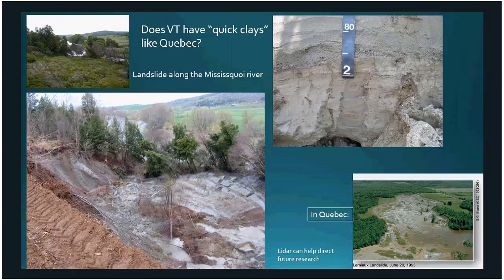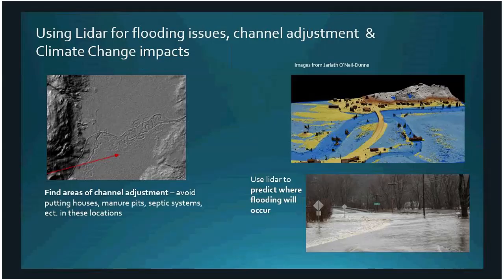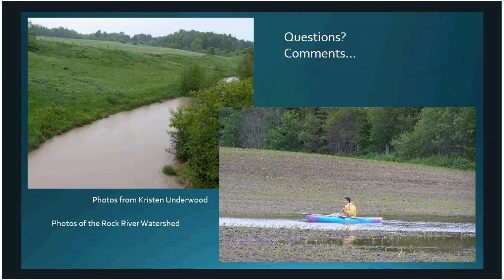Using an accurate DEM you can fill up the landscape with a simulated flood and see which houses are in danger. Looking at those channels along a stream corridor, you can identify whether it's a good place to put a manure pit, a septic system, or a house — the answer being no. Now with LiDAR, it's like we have X-ray vision. We can pick these things out with much greater precision, and that's the end of the presentation.